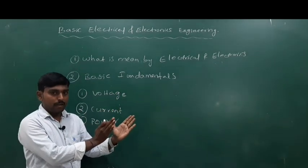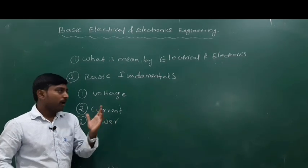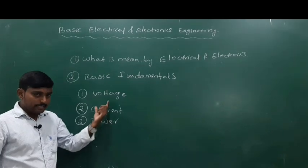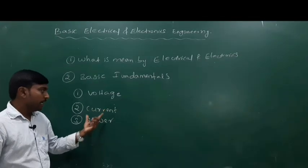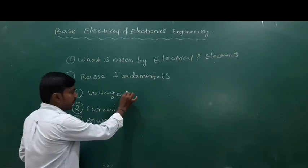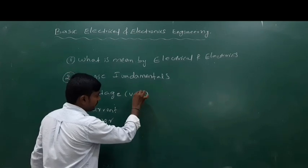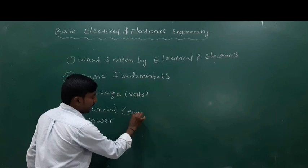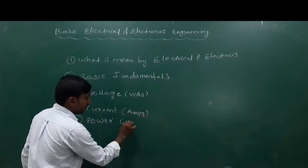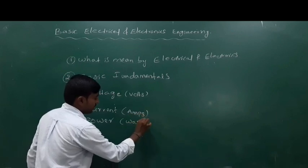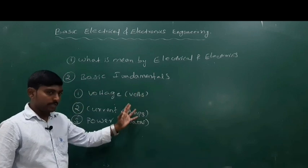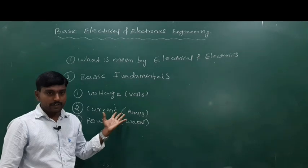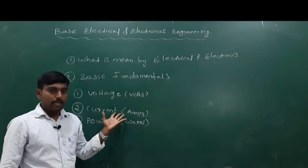We are not giving the definitions of voltage, current, and power now — we will discuss them later. The units of voltage are volts (V), current is amperes (A), and power is watts (W). Based on these specifications, we identify whether the given device is electrical or electronics.